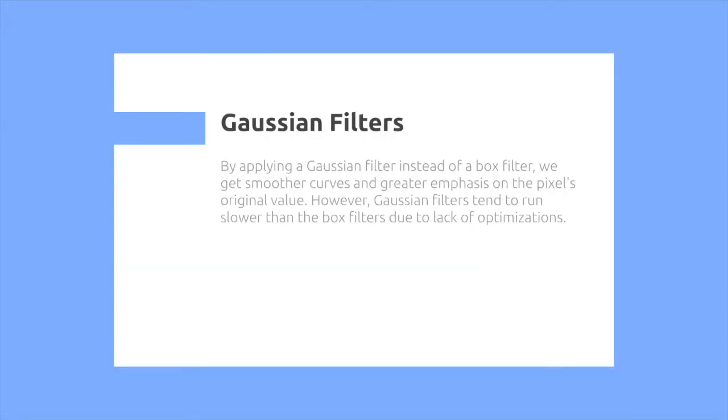By applying a Gaussian filter instead of a box filter, we get smoother curves and greater emphasis on the pixel's original value. However, Gaussian filters tend to run slower than the box filters due to lack of optimizations.